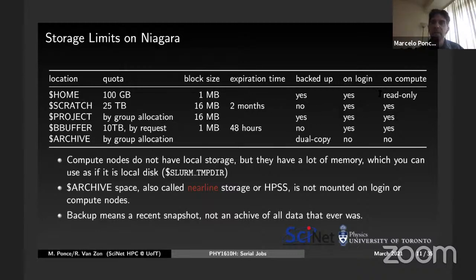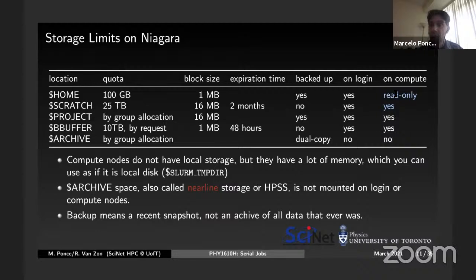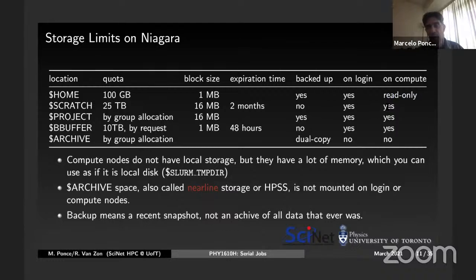One important difference: home is read-only when you are running jobs on compute nodes. You can read from home, but you cannot write to home. So your jobs, when running your program, should write to scratch. To do that, you either launch the job from a location on scratch, or you instruct your job to write to scratch specifically. This is a common source of failure in jobs when you try to run from home and get an error saying you couldn't write a file.